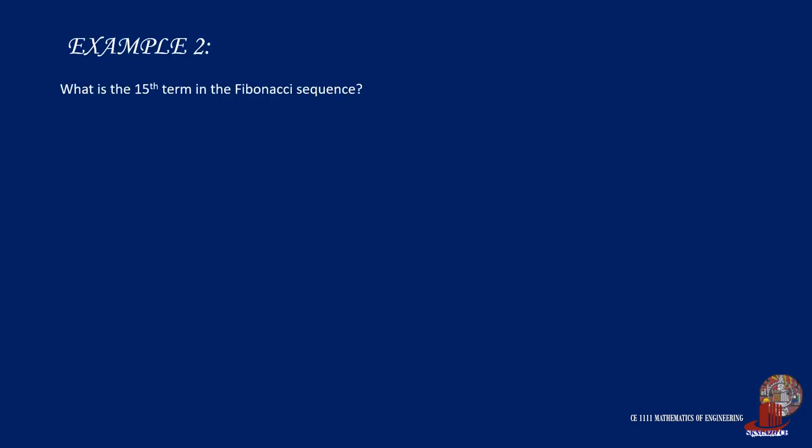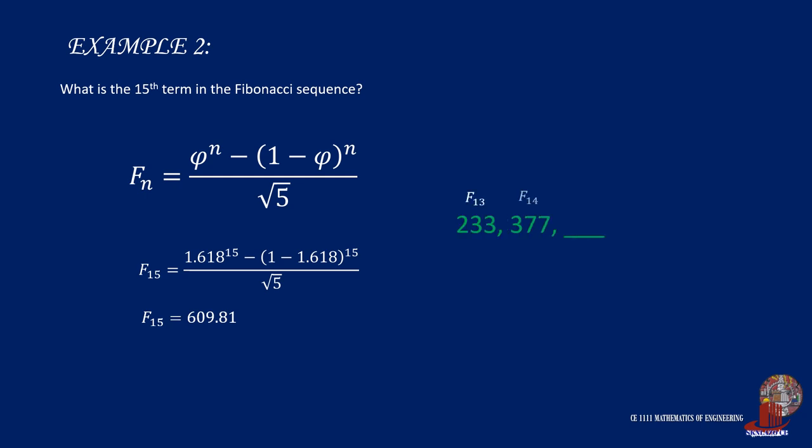With the 15th term, we have F sub 15 as 1.618 raised to 15 minus the quantity of 1 minus 1.618 raised to 15, then everything is divided by root of 5 to get 609.81, which is also close to the iterated value of 610.